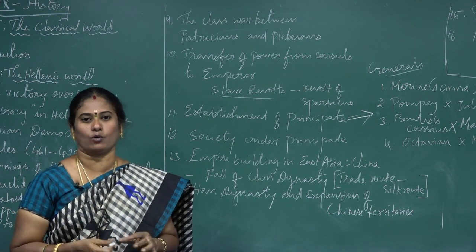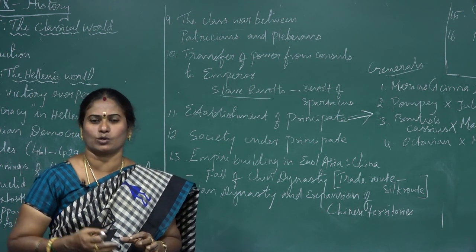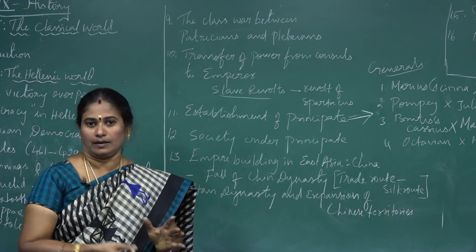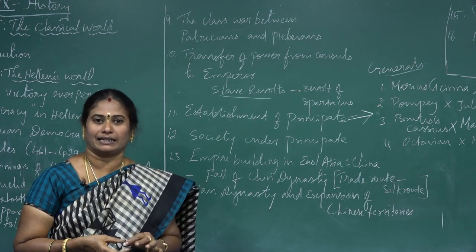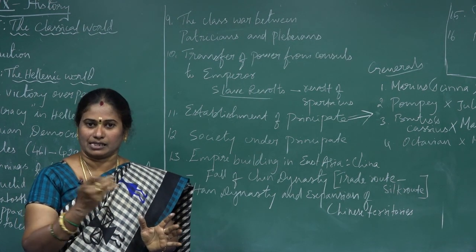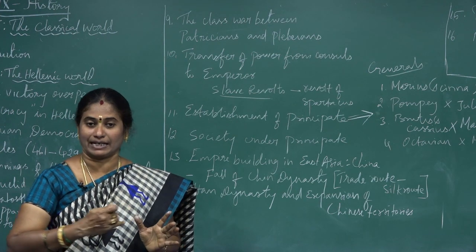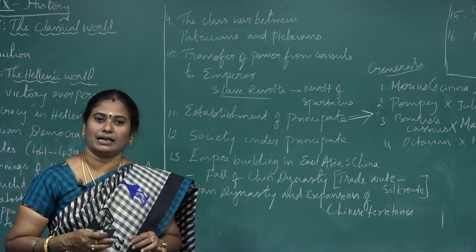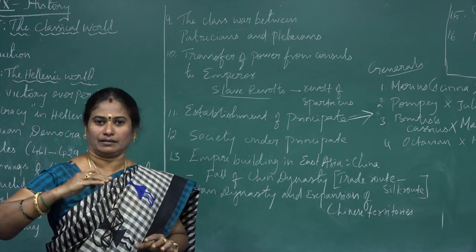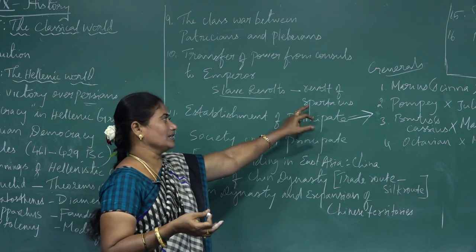One of the most famous revolts was the revolt of Spartacus. More than 17,000 slaves participated in this revolt, conducted in 73 BC. Spartacus was crushed and the revolt ended. About 6,000 of his followers were transferred to other places. This is about the revolt of Spartacus.